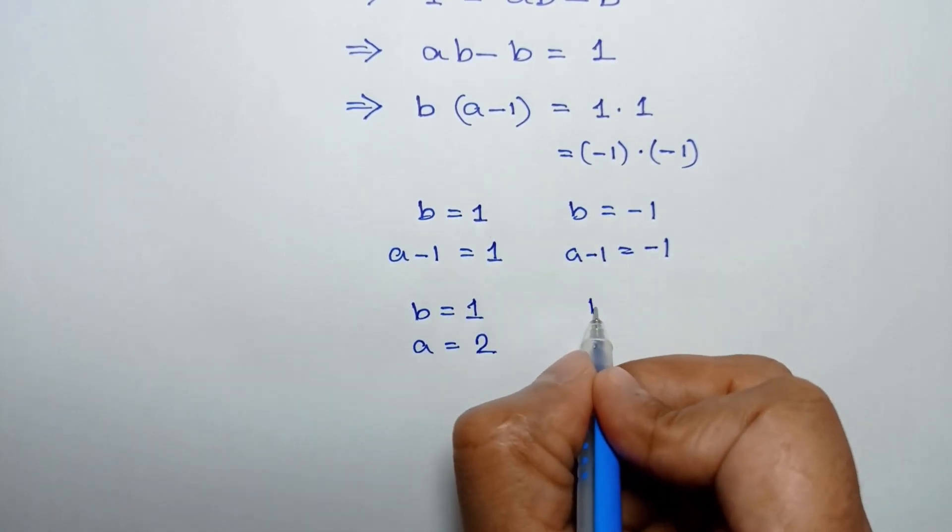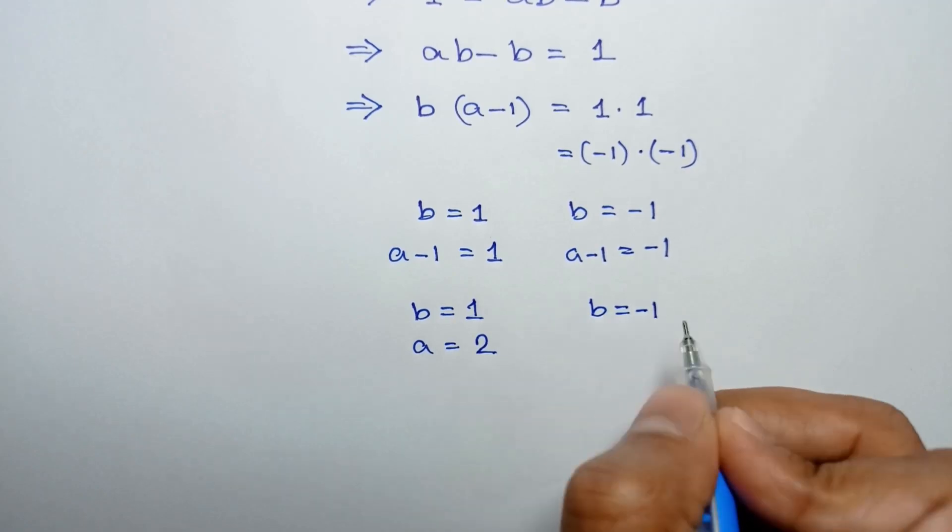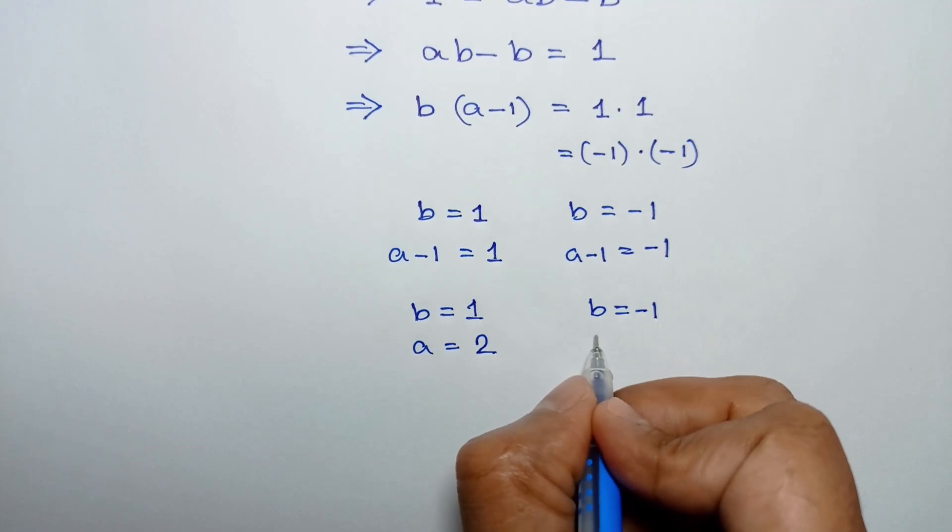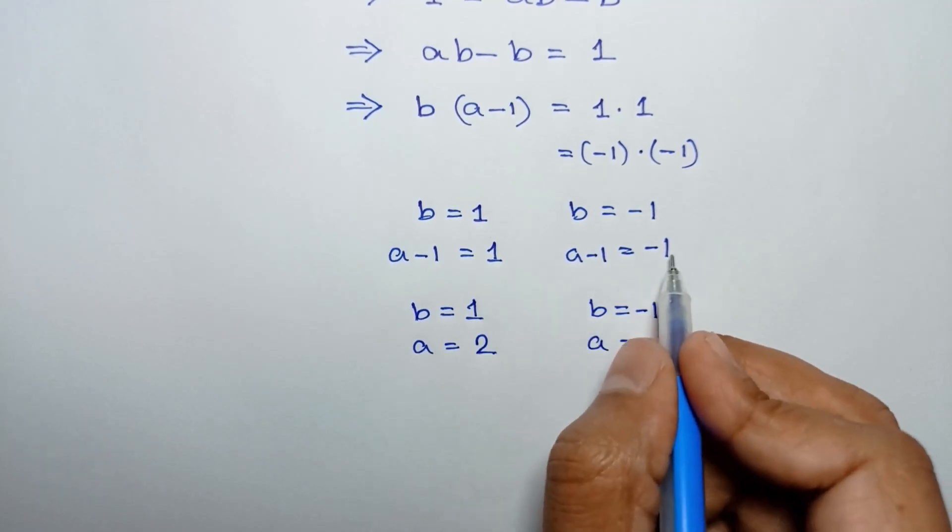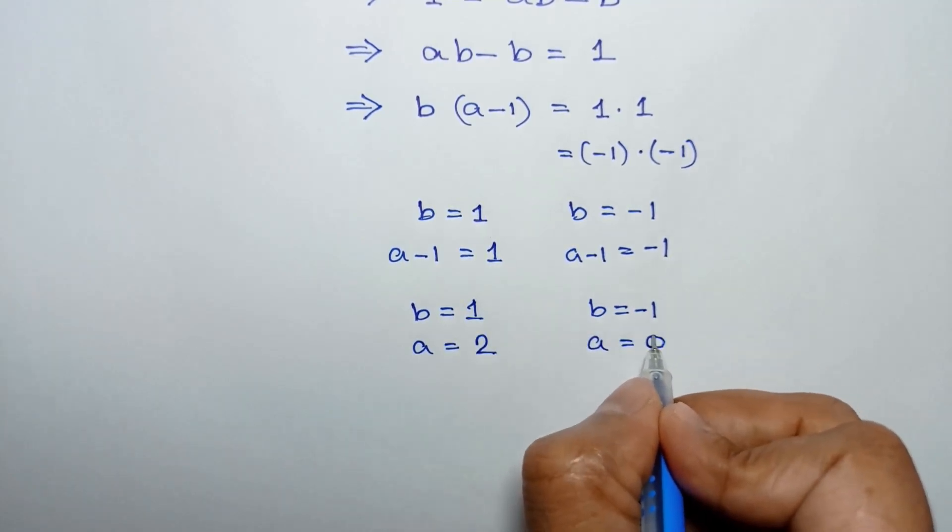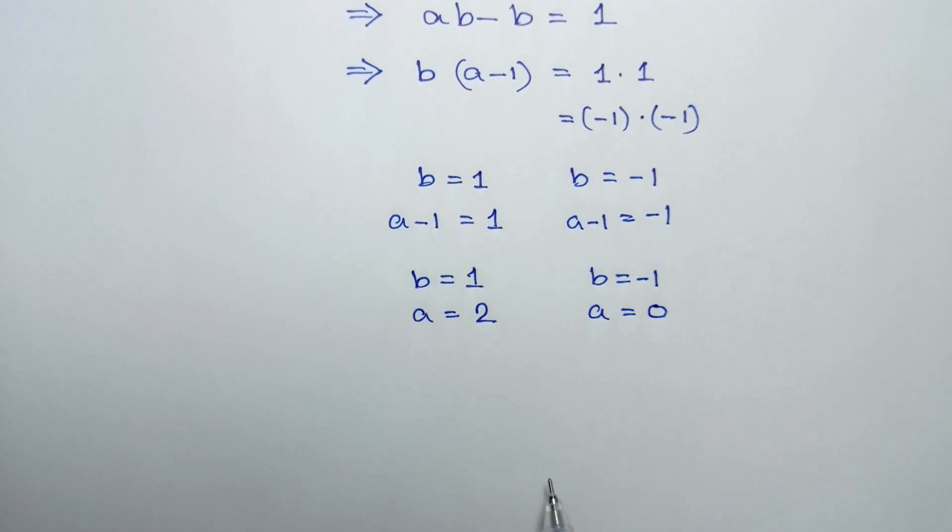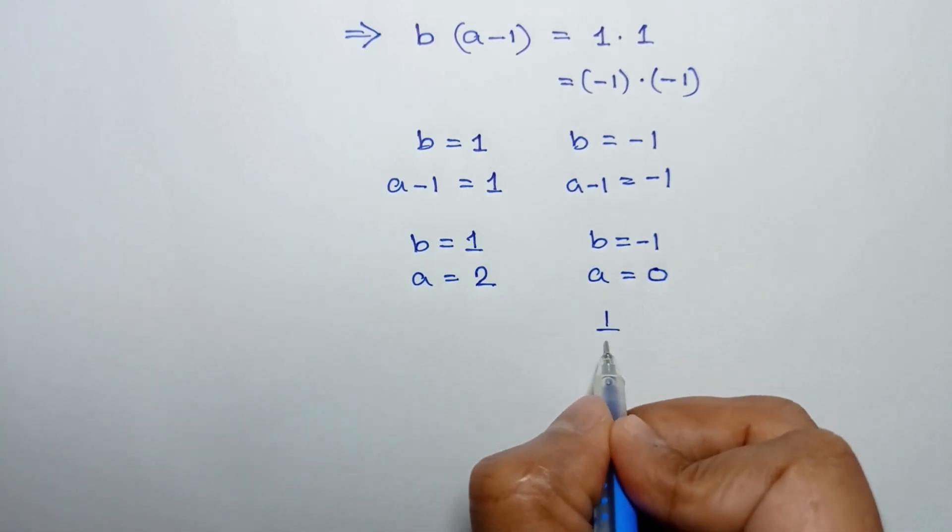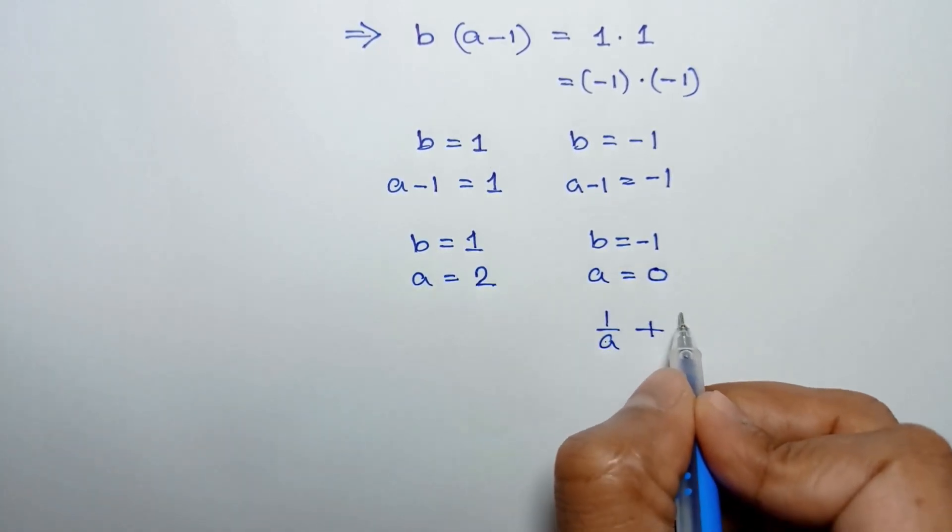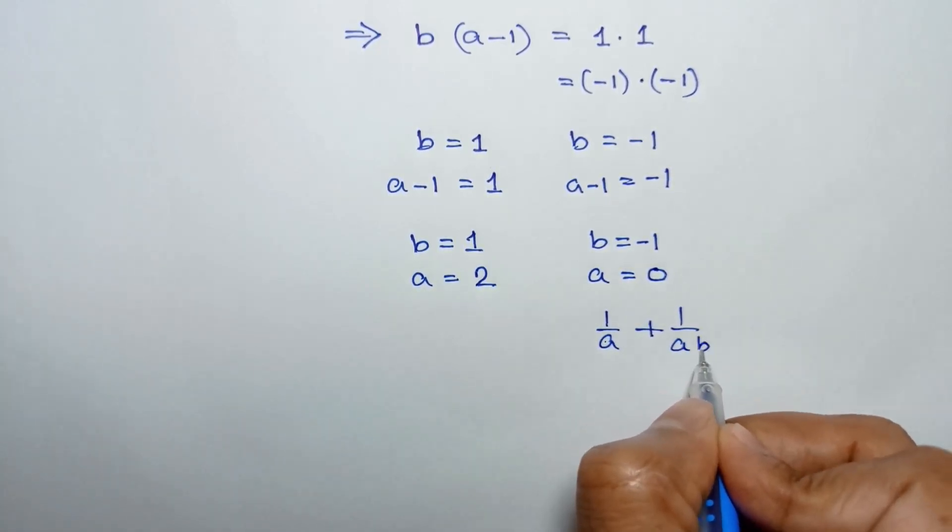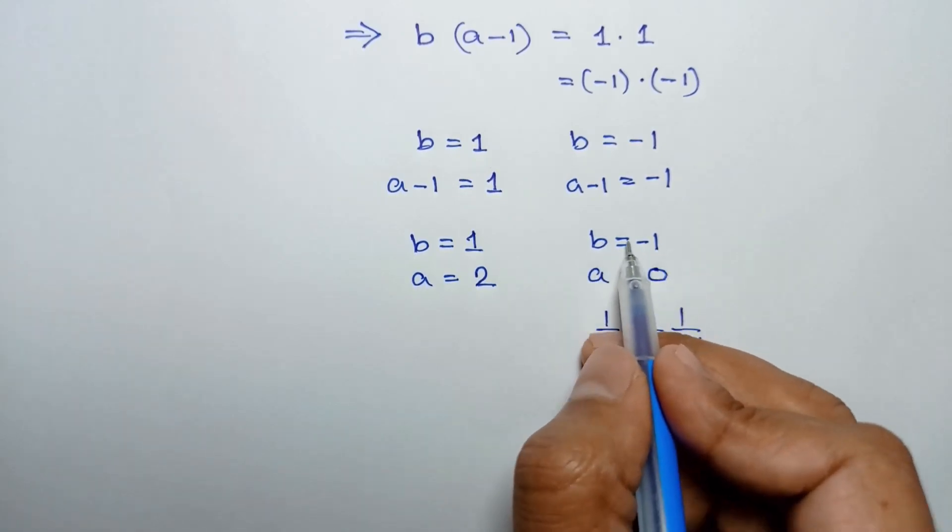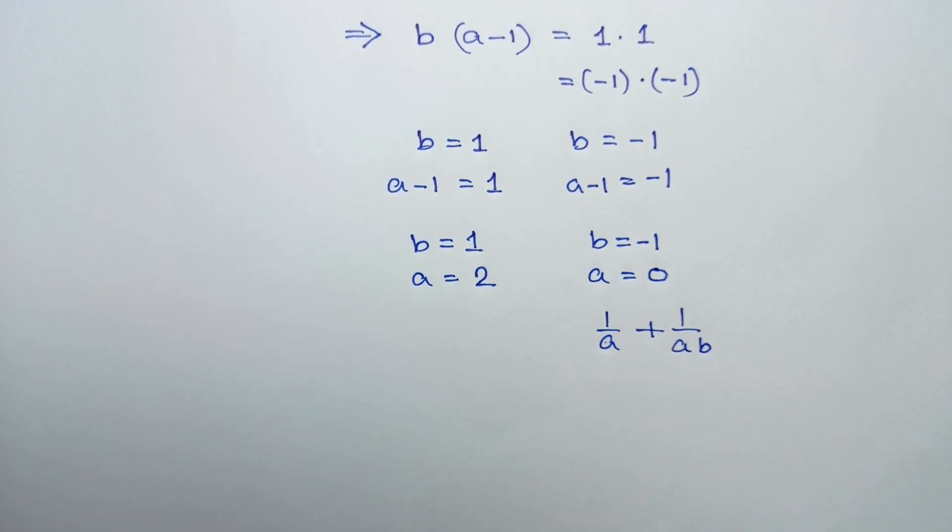And taking this -1 to the right side, we will get a = 1 - 1 = 0. But when a is 0, then 1/a + 1/ab will be undefined. So this cannot be the solution of this given equation.